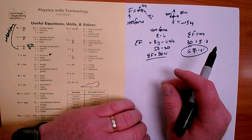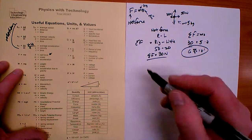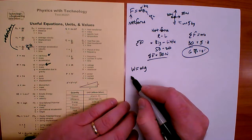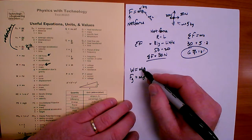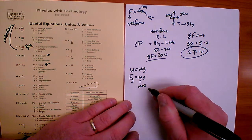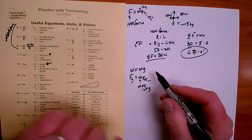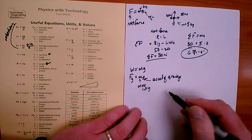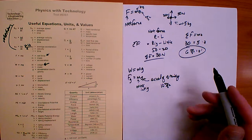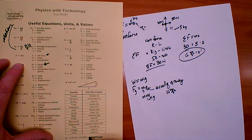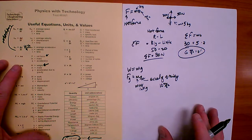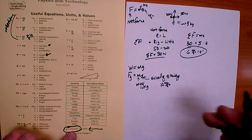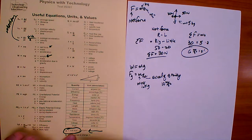The next equation is W equals MG, where W is weight (the force of gravity), M is mass in kilograms, and G is the acceleration due to gravity. We often use 10 meters per second squared for easier math, but the equation sheet uses the more precise value of 9.8 meters per second squared. For a 5-kilogram object: 5 times 9.8 equals 49 Newtons of weight.